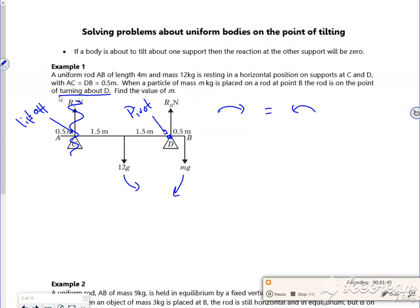Going clockwise is this one, so it's got mg times by 0.5m from the pivot. Then I've got 12g times by 1.5m away from the pivot. So the g's will cancel.